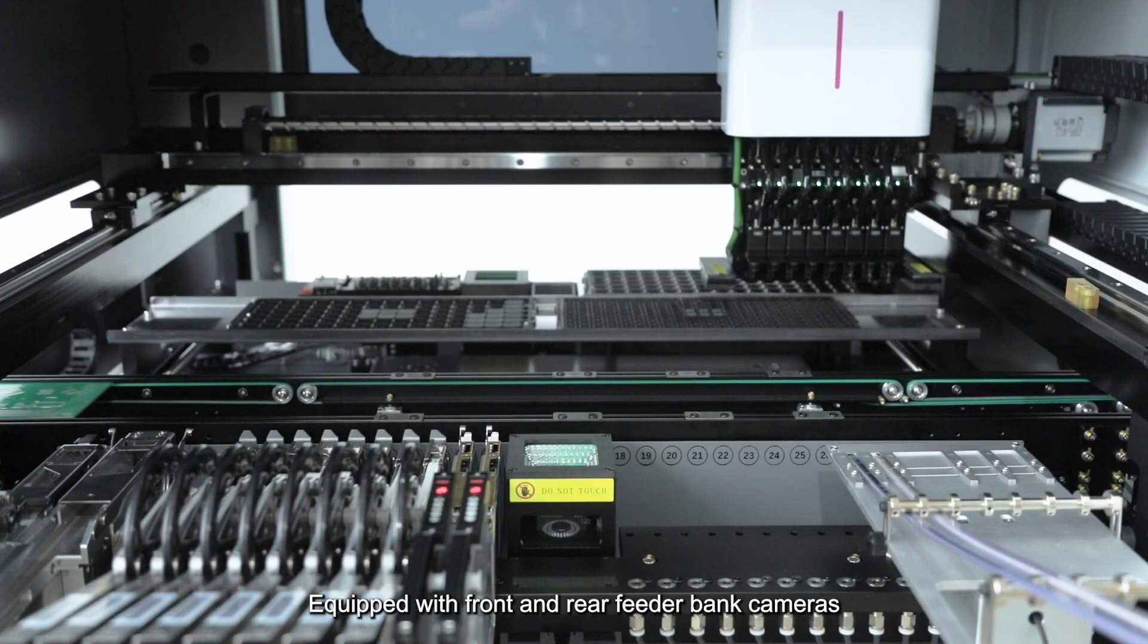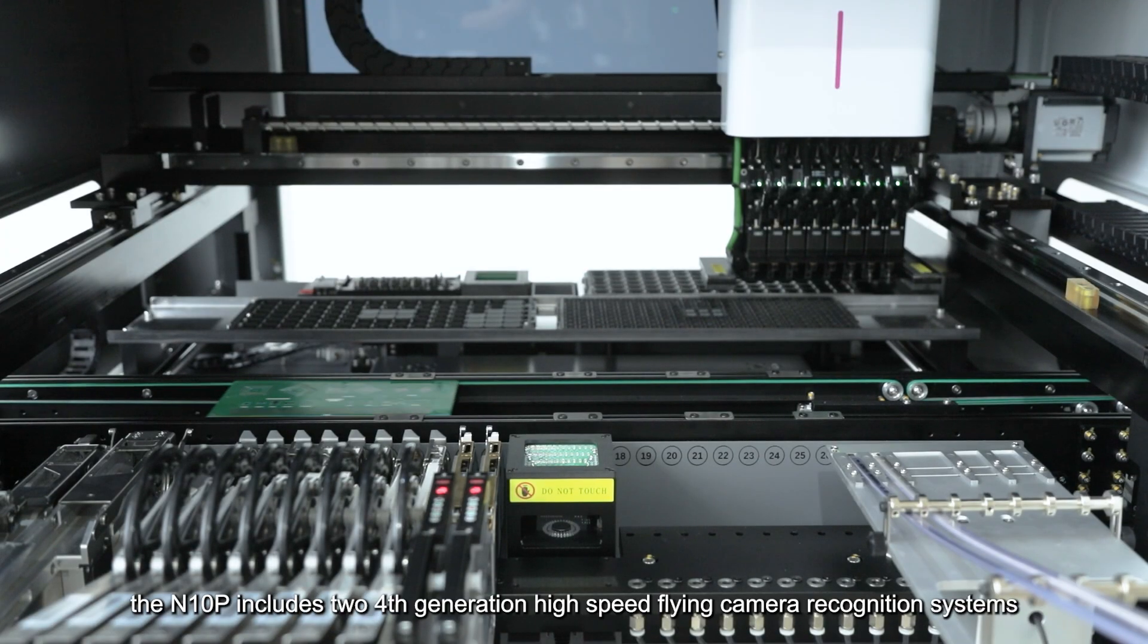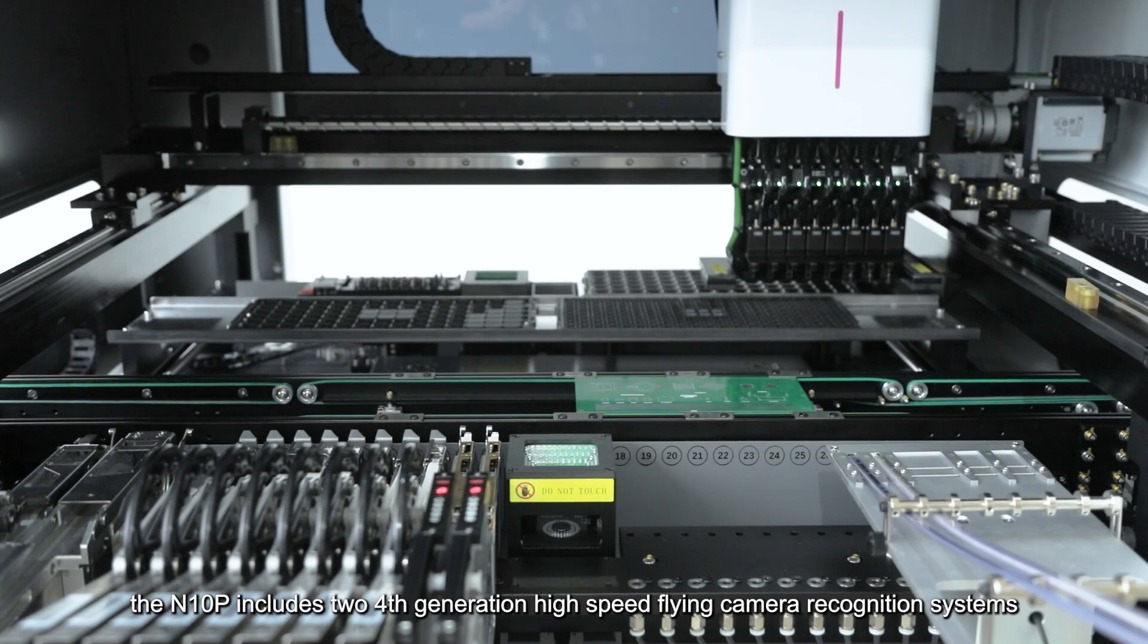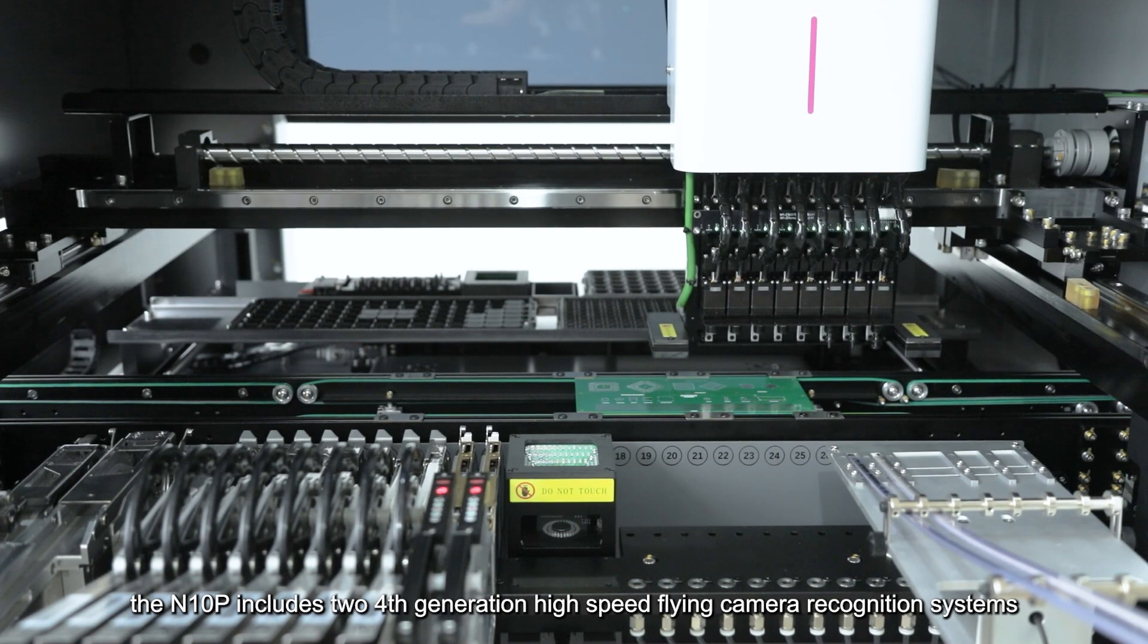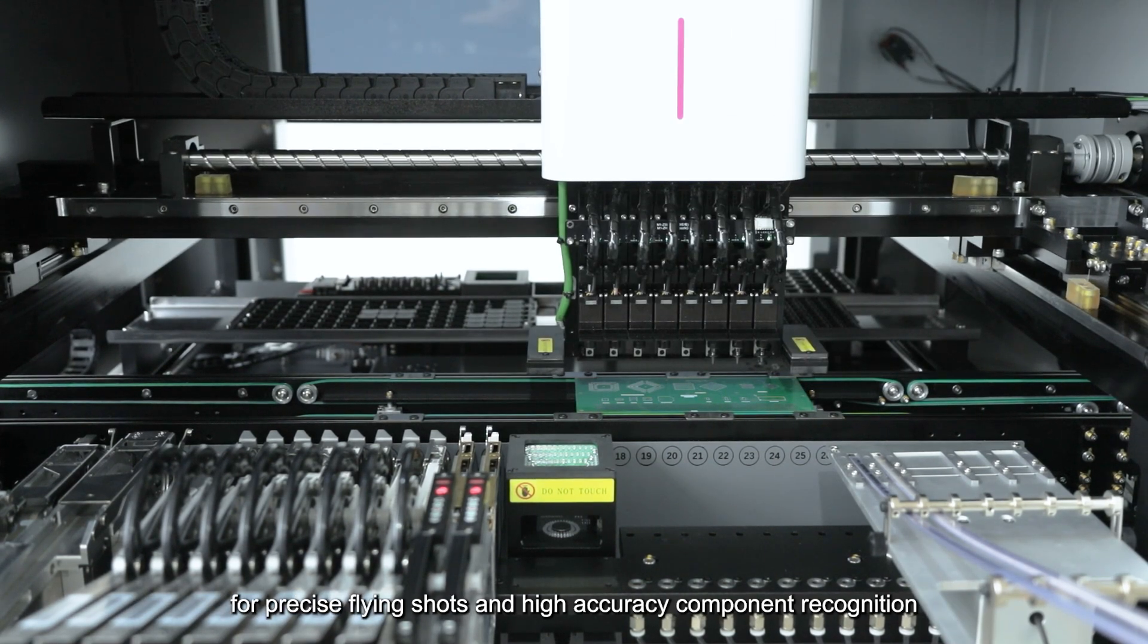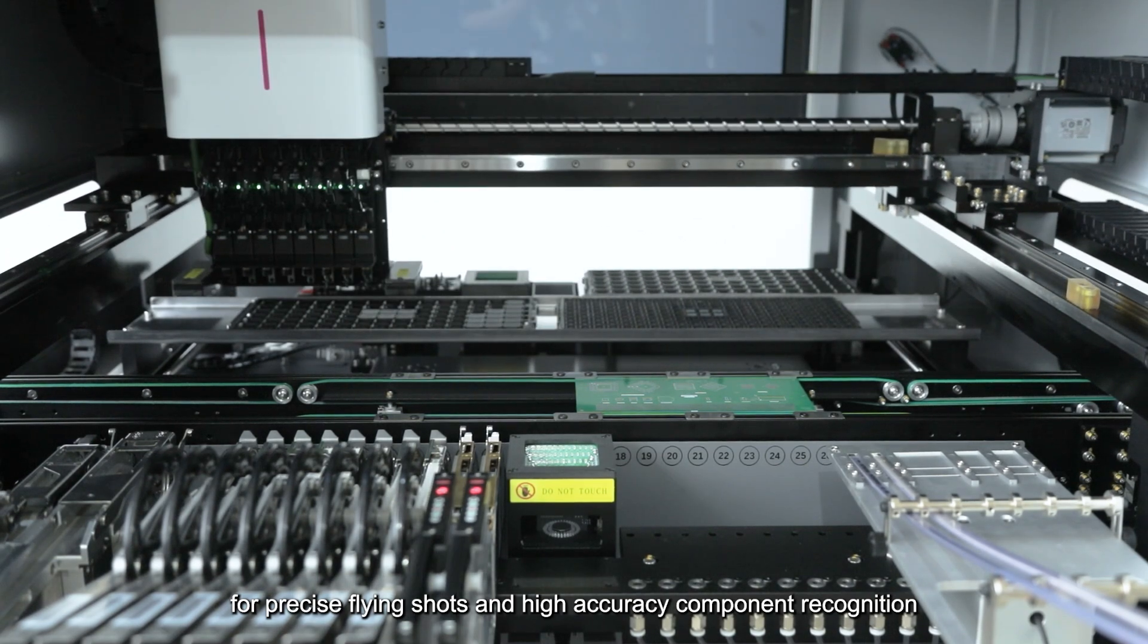Equipped with front and rear feeder bank cameras, the N10P includes two fourth-generation high-speed flying camera recognition systems for precise flying shots and high-accuracy component recognition.